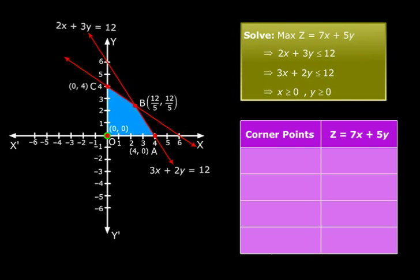So let's talk about the first point. What will be the value of z? 7 times 4 plus 5 times 0, which is 28 plus 0, or simply 28. In a similar fashion, we can find all the other values. You see them all? 28, 28.8, 20, and 0. Now which is the maximum value among these?